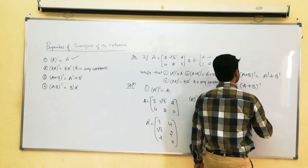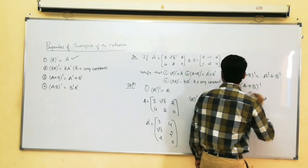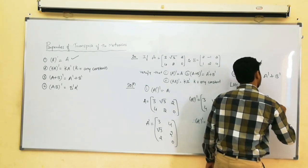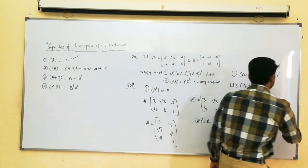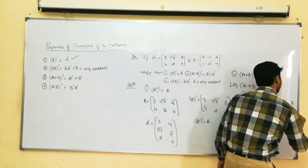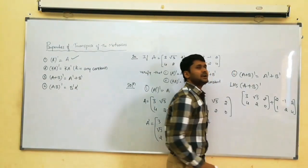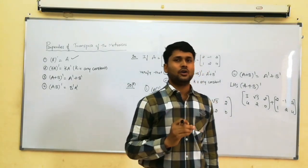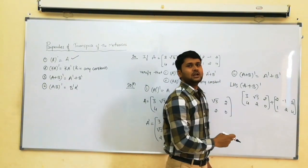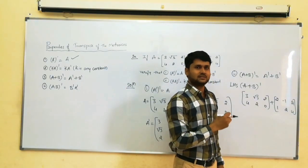What is matrix A? Write down: 3, root 3, 2 in the first row and 4, 2, 0 in the second row. Matrix B: 2, minus 1, 2 in the first row and 1, 2, 4 in the second row. We have to add A plus B. Matrix addition is possible when the orders are the same. Order of A is 2 by 3 and order of B is 2 by 3, so addition is possible.